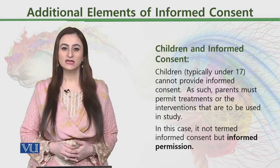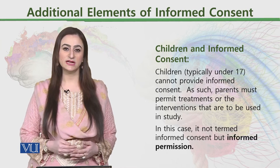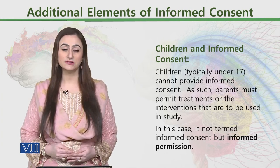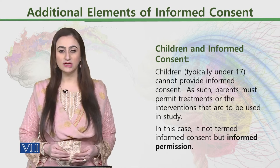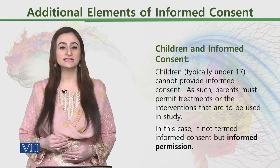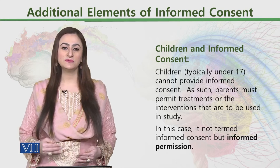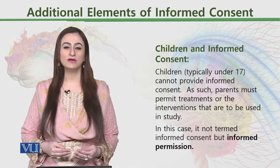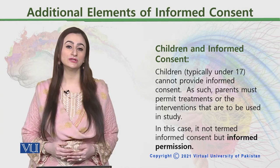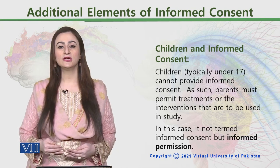Then, children and informed consent. When we typically talk about those under 17, they cannot provide informed consent on their own. In that case, we do not talk about informed consent but rather informed permission, because parents must permit any kind of participation or treatment intervention used in research. When we take consent from parents on behalf of children, the consent obtained from children themselves is only called informed permission. These are the various ways in which we can go through this process smoothly and decide what exemptions apply, when to take informed consent from adults, and when children give informed permission.